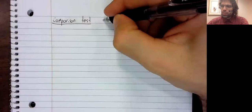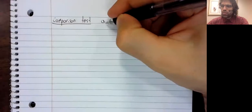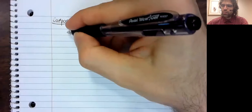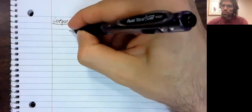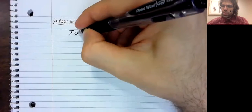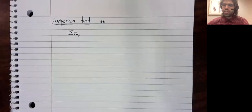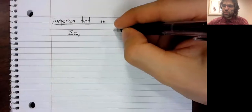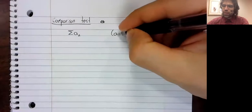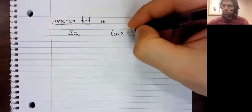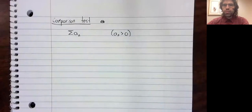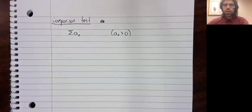The comparison test has two parts. Both of them involve two sets of numbers. Let's say that we're looking at a series A sub N, where, as with the integral test, all of these terms are positive.